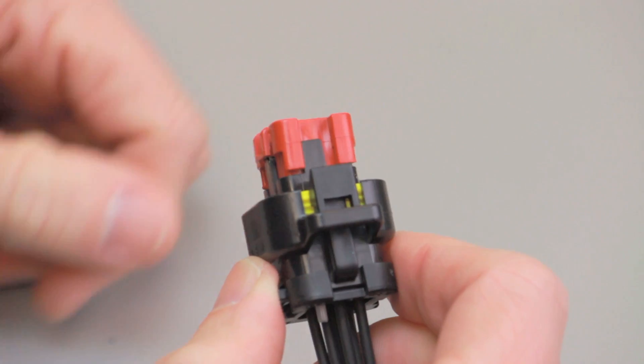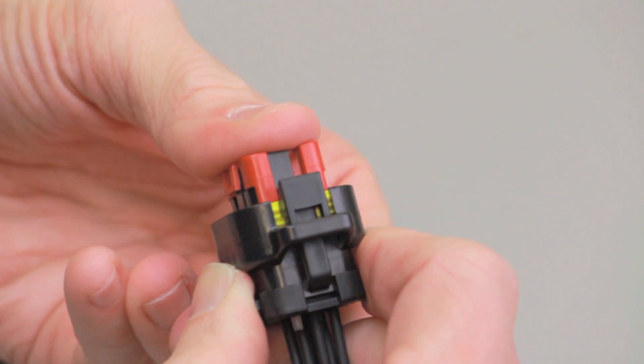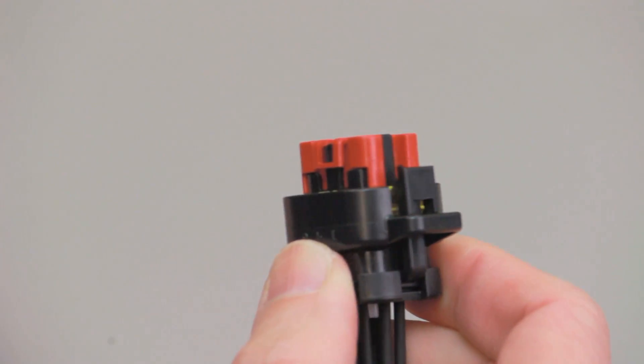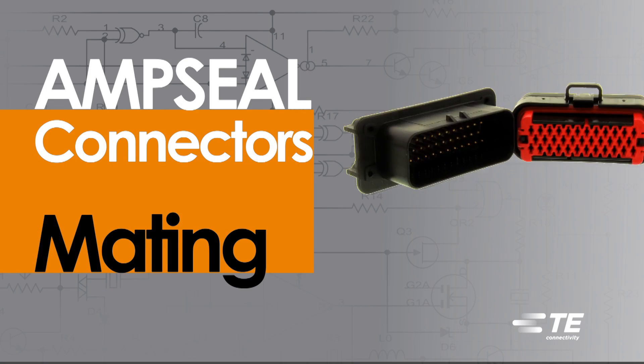After all the contacts have been inserted, close the wedge lock by pushing the wedge lock into the fully locked position.